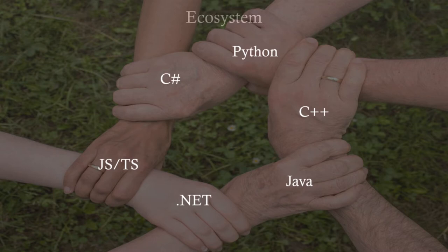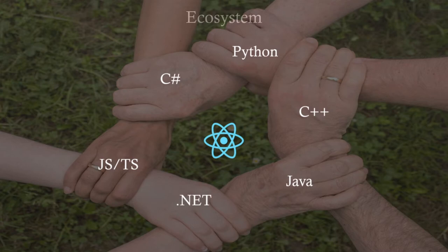This is the current ecosystem — Python, C#, C++, Java, .NET, JavaScript, TypeScript, and here and there Ruby and Go. Projects are mostly based on these languages. So how will these languages adopt React as a child? That is something interesting we will be talking about.